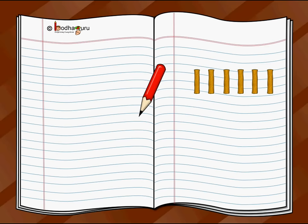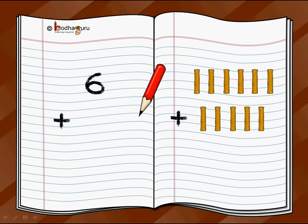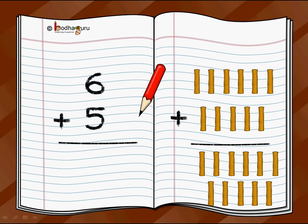Let's take another problem. I have six sticks and I got five more sticks. Counting the initial six: one, two, three, four, five, six. And five more: one, two, three, four, five. Continuing the total: seven, eight, nine, ten, eleven. I got now a total of eleven sticks.